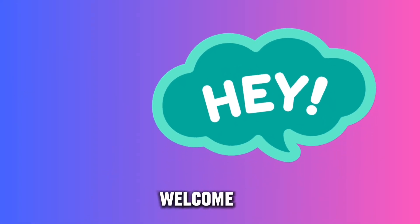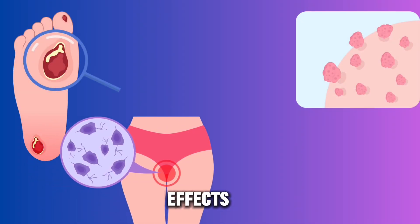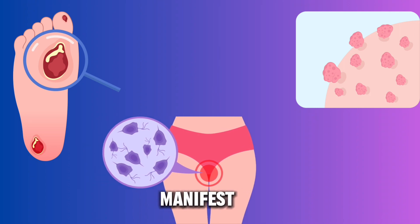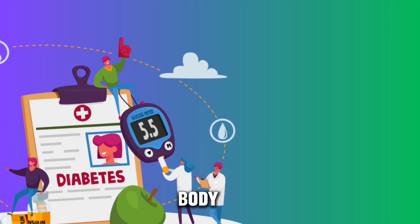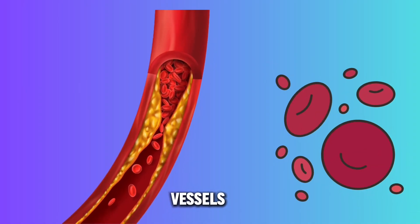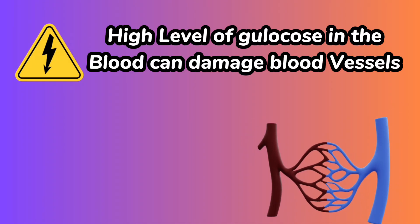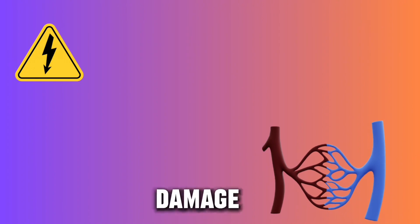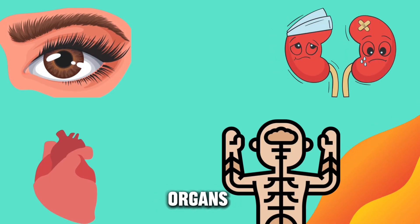Hi everyone, welcome to my channel. The effects of diabetes can manifest in various parts of the body, but often the initial impact is on the blood vessels. High levels of glucose in the blood can damage blood vessels, affecting organs